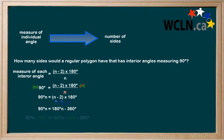Subtract 180n from both sides. Now divide both sides by negative 90. This gives you an answer of n equals 4.